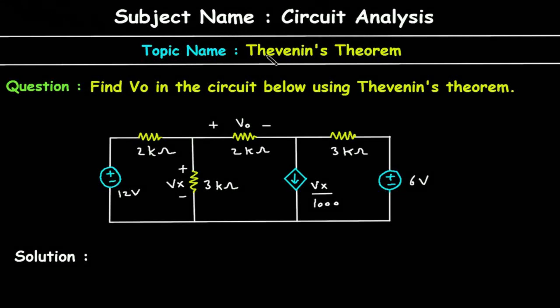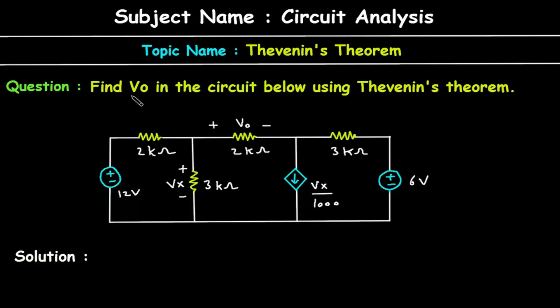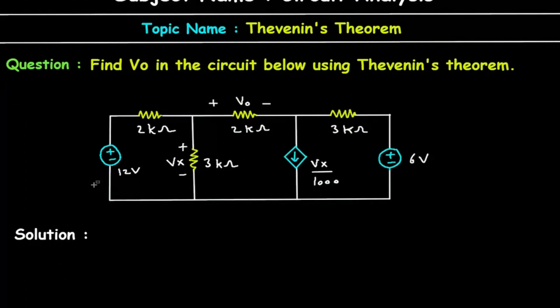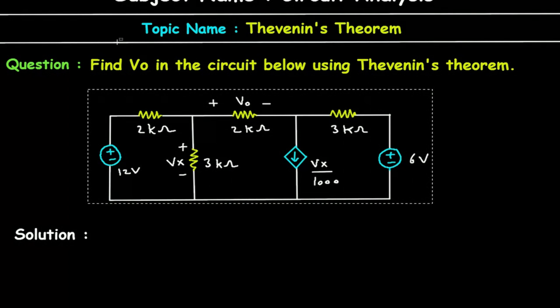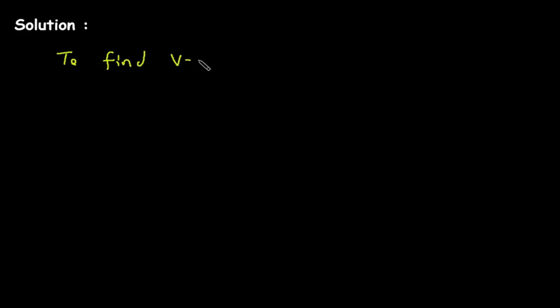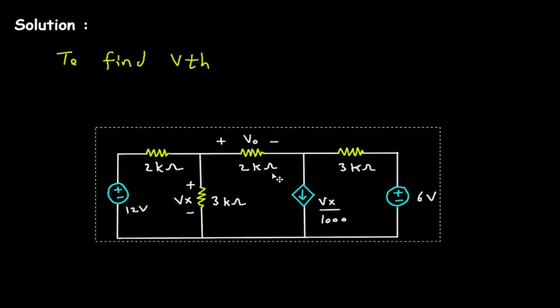Subject: Circuit Analysis. Topic: Thevenin's Theorem. Question: Find VO in the circuit below using Thevenin's theorem. By using Thevenin's theorem we have to find VO. We will find Vth, that is Thevenin's voltage.